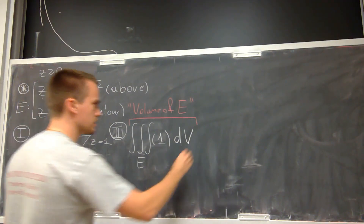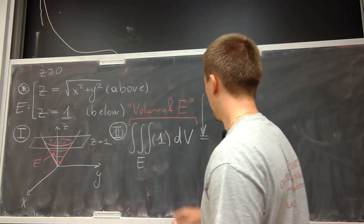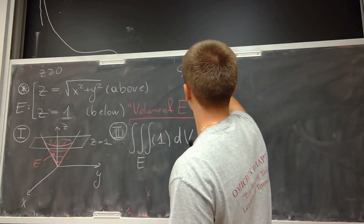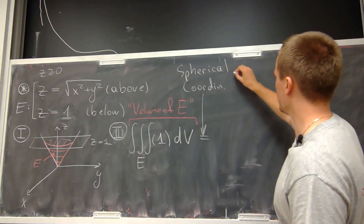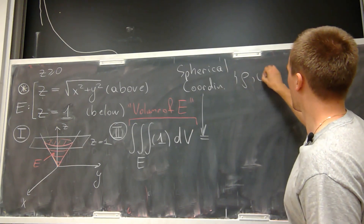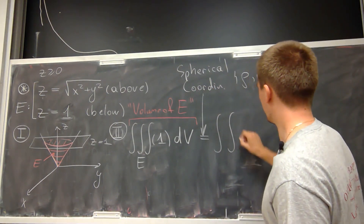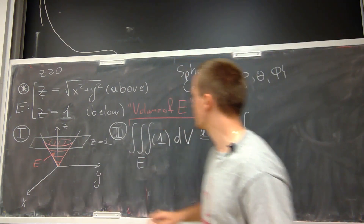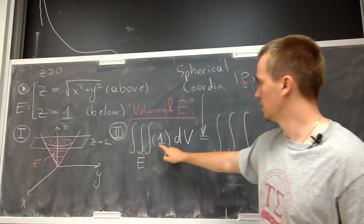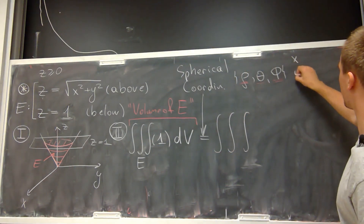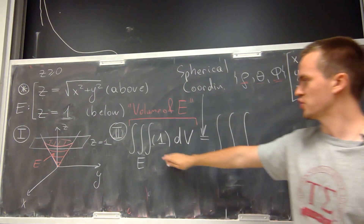Since I want to use spherical coordinates, I'm going to expand dV into spherical form. In spherical coordinates I have variables ρ, θ, and φ. I want to describe region E using these three variables, and I need to substitute the spherical coordinate change of variables for x, y, and z.